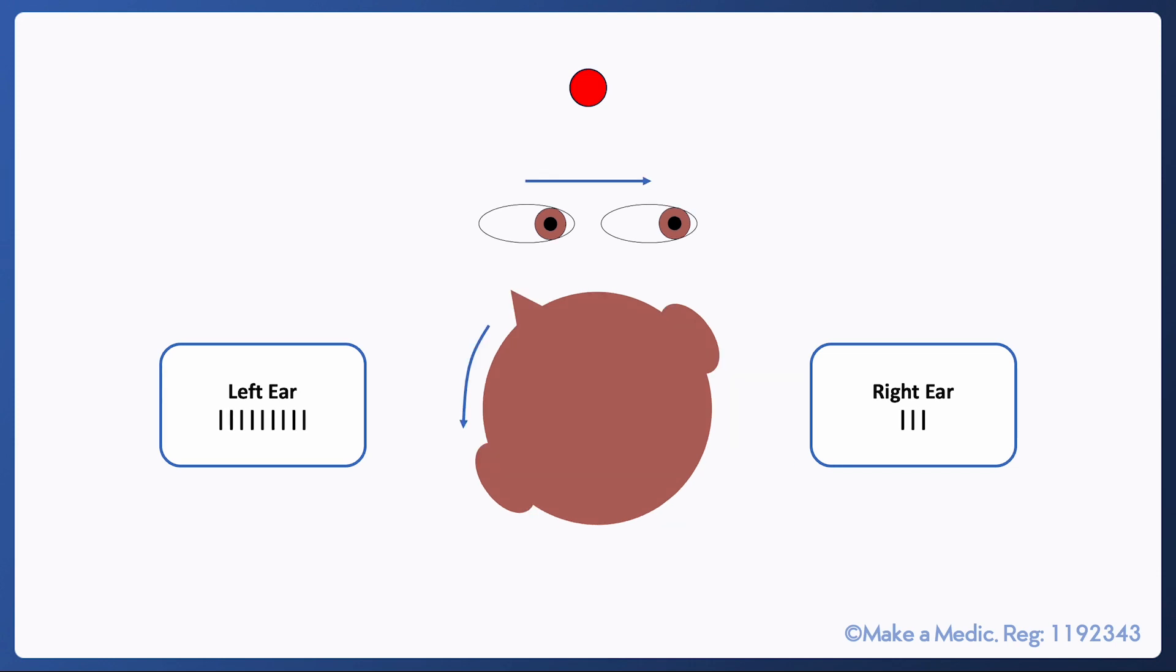When the head rotates to the left the semicircular canals on the left will be activated and those on the right will be inhibited. The two signals are fed back to the brainstem and a vestibulo-ocular reflex is initiated to maintain focus on the object.